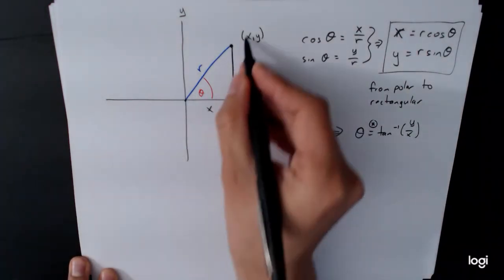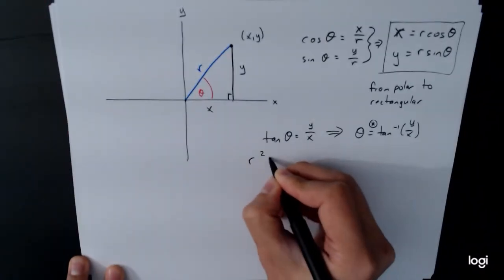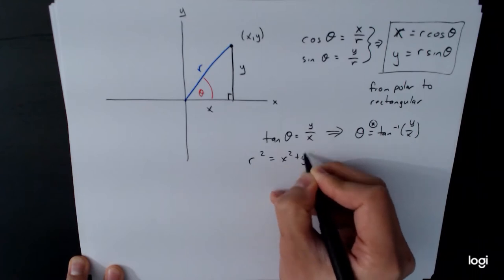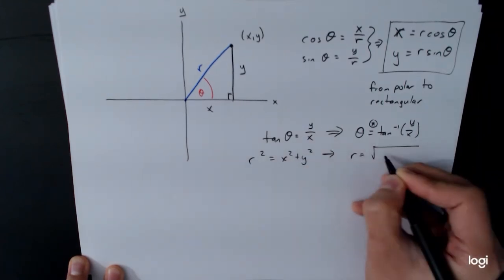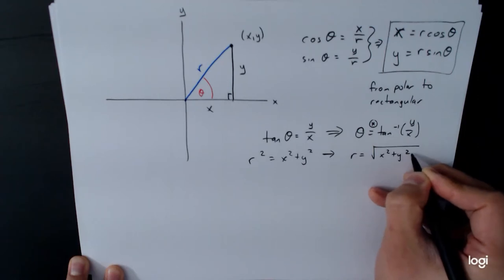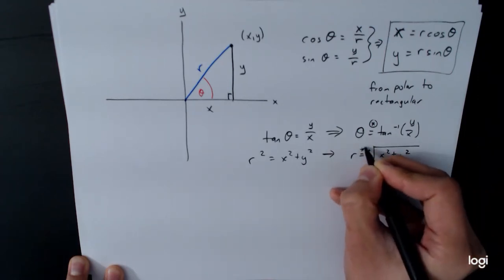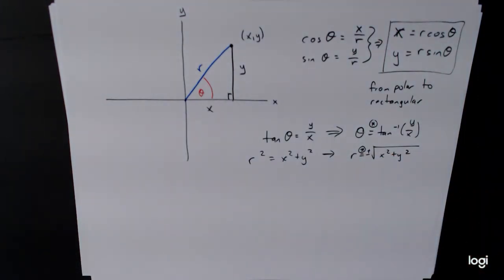And for r, we see that we have a right triangle, so we could actually use the Pythagorean theorem. r squared is equal to x squared plus y squared. Or if you wanted, r is equal to the square root of x squared plus y squared. And again, there's a little bit of a star here because we're not entirely sure. So what's going on?